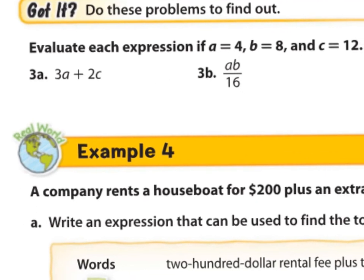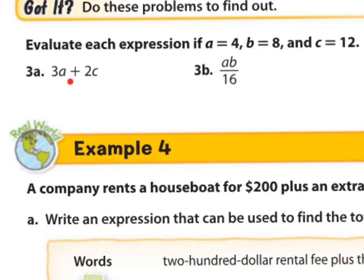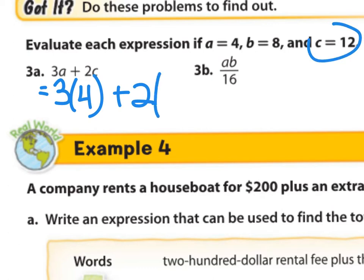Question 3a. We have 3a plus 2c. a is 4 and c is 12. So we go and we replace the variables with 3. We said a is times 4. Plus 2. And c is, we said c is 12. There it is. 2 times 12. Now we solve. 3 times 4 is 12. Plus 2 times 12 is 24. Notice that I did my multiplications first. Here's multiplication and here's multiplication. And I'm saving the addition for last. Because it's the order of operation. And now I have 12 plus 24 is 36.